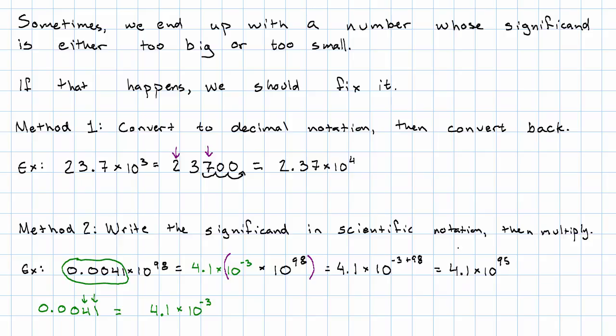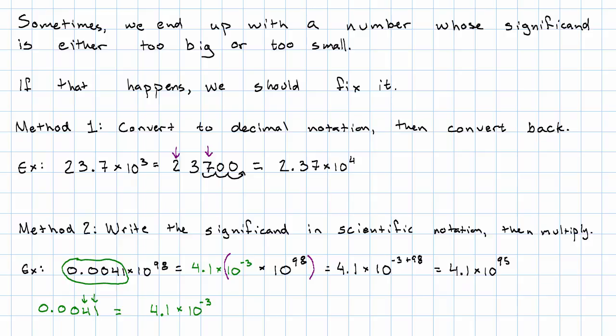The advantage here is that I don't have to write out 95 zeros or 90 some zeros. I don't have to do any method that involves counting to 98. So that's how we handle misformed scientific notation.